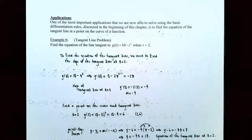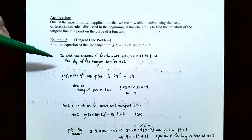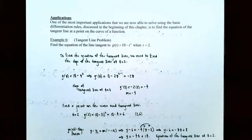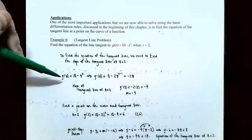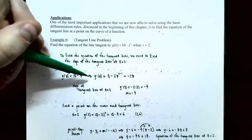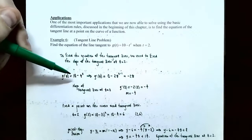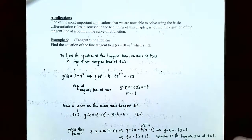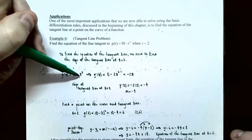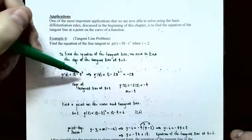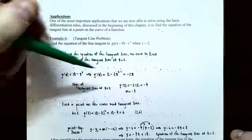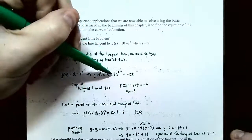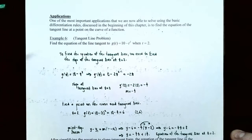There are a few steps on this kind of problem. We need to know what the slope of the tangent line is first at t equals 2, which means we need to calculate the derivative of g of t. If g of t is 10 minus t squared, then g prime of t: the derivative of 10 is 0 by the constant function rule. Then using the power rule on t squared, bring the 2 down as a coefficient, keep the t, and subtract 1 from the exponent — giving negative 2t.